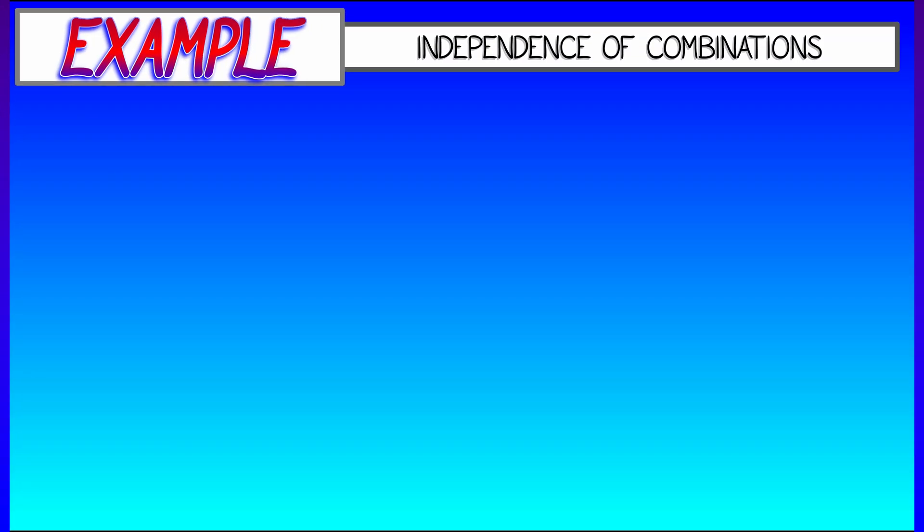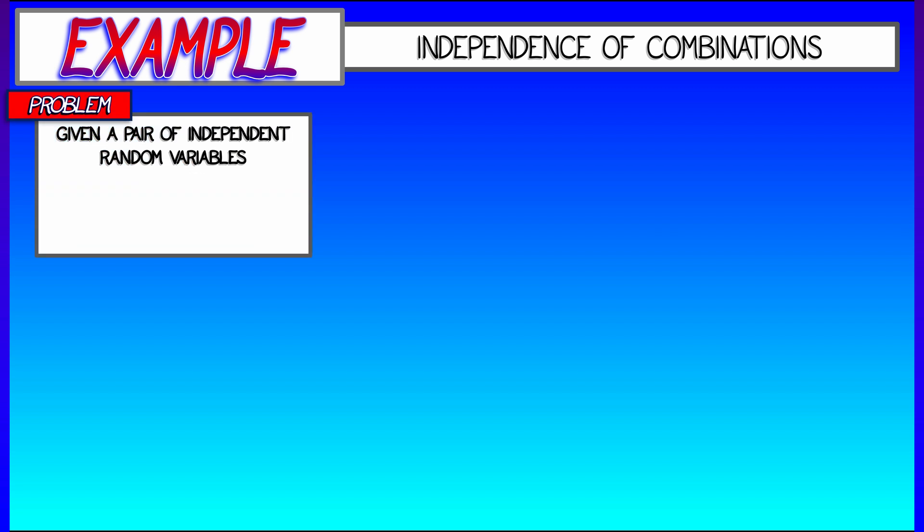Here's an example that I think is a lot of fun. It's a little counterintuitive. Let's say you're given two independent random variables, x1 and x2. Now, consider what happens when you take their sum, x1 plus x2, and their difference, x1 minus x2. And the question is, are these two random variables also independent?